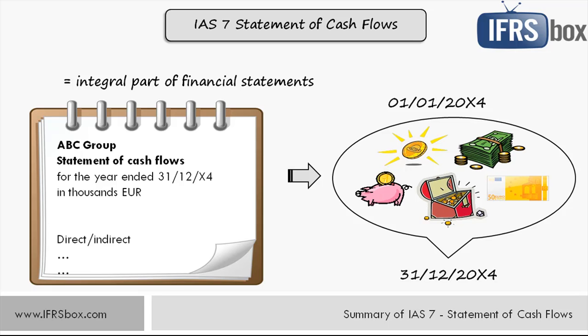There must be a name of the reporting entity, and it must be clearly stated whether we are looking at the group or individual Statement of Cash Flows. It must contain the title 'Statement of Cash Flows', the period covered, and finally the reporting currency and the rounding used in presentation of numbers — whether figures are presented in thousands, millions, etc.